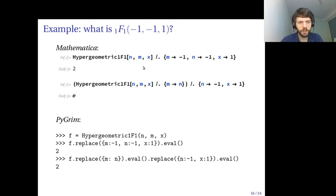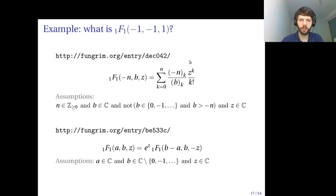As an example, in Mathematica, if you evaluate the 1F1 function in two different ways, you could get the value 2 or e for this expression. If you do it in Pygrim, you get the same result both ways. So it's meant to be consistent. If you look in the Fungrim database for the entries describing the 1F1 function, you will find that the assumptions actually rule out a contradiction. In this case, this entry is applicable, but the one at the bottom, which would give you e instead of 2, is not applicable. So there is no contradiction because of the explicit assumptions.